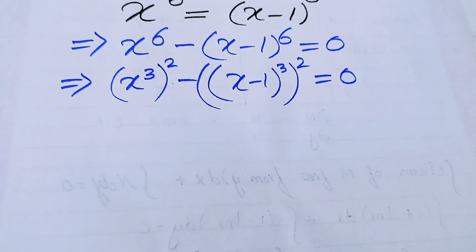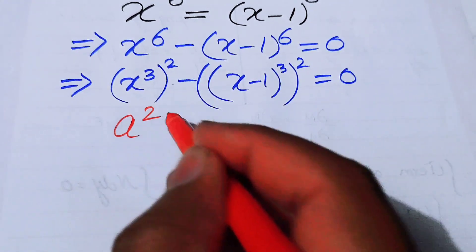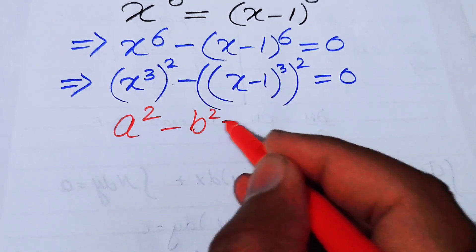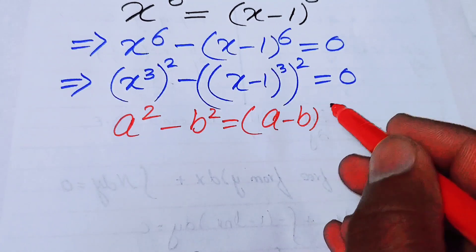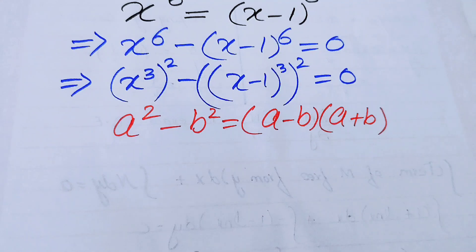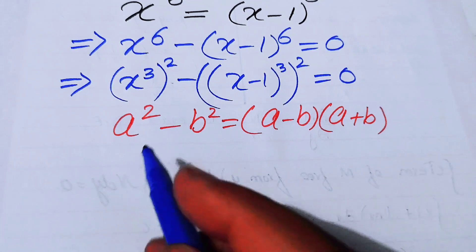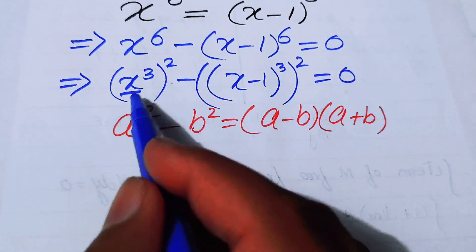We use the formula: a² minus b² equals (a minus b) times (a plus b). We apply this formula by putting in the values of a and b to get the output in the required form.